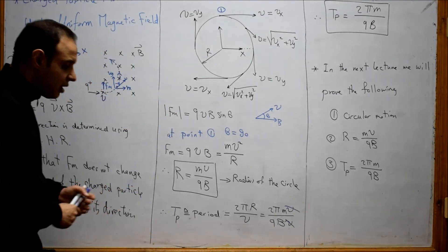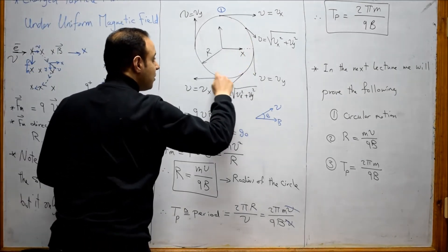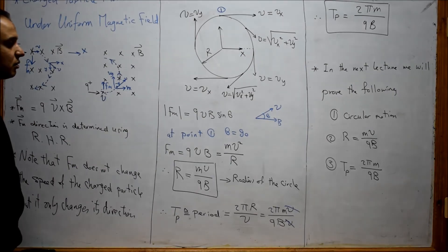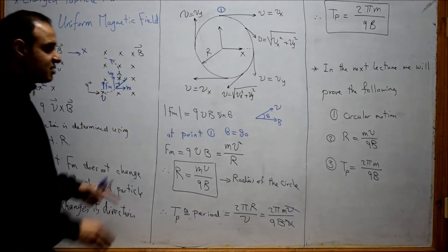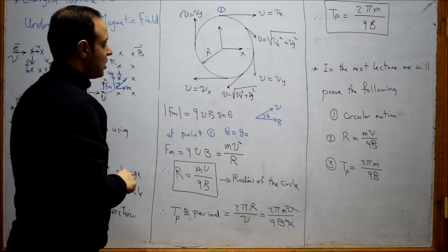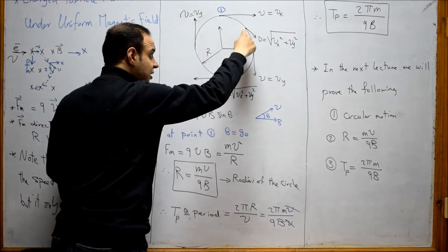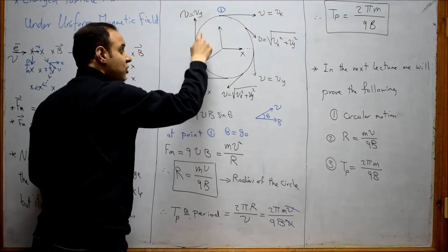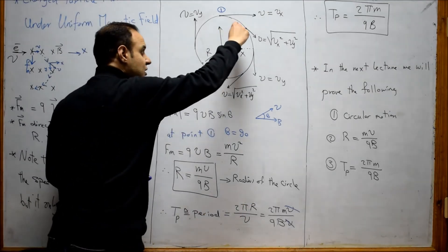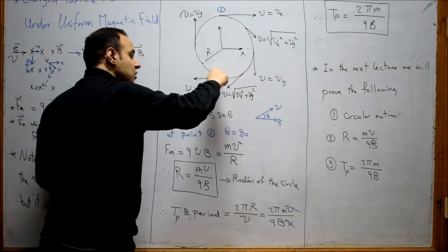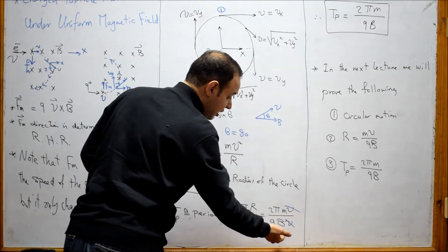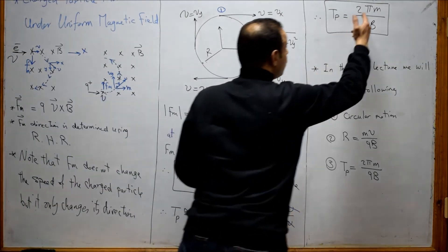The time period is the time taken by the charged particle to make one complete circumference. Time equals the distance traveled divided by the speed. The distance traveled is the circumference of the circle, which is 2πr. The speed along the journey is constant, equal to v. Substituting r = mv/qB, the v cancels, so T = 2πm / qB.